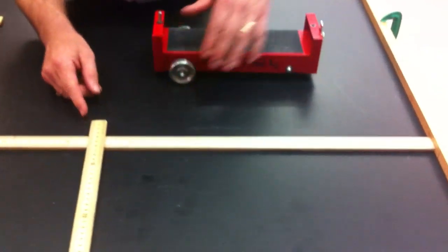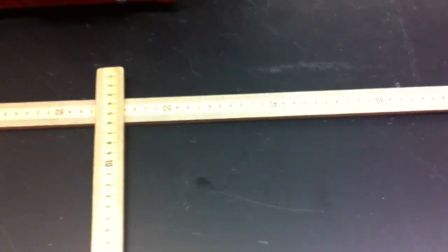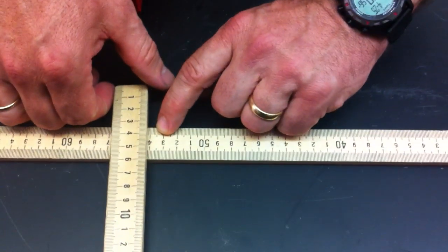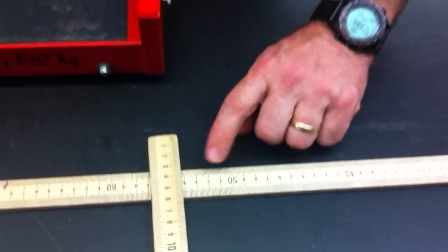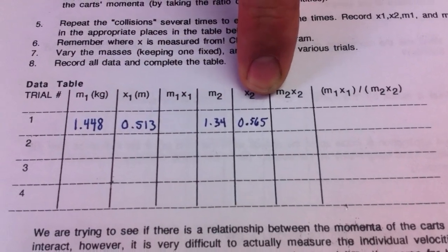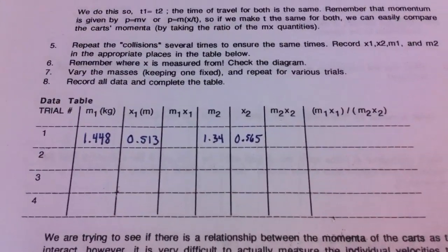And then for cart two, that one went to, it was originally like this. So that cart went to right about here. So that was about 0.565 meters is what it was originally. We bumped the meter stick.